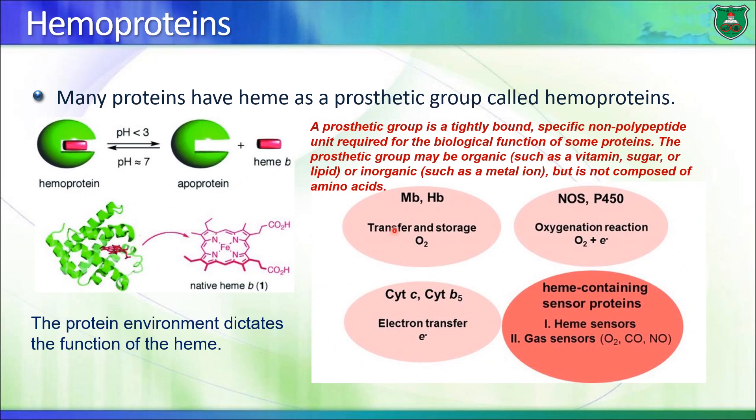Myoglobin and hemoglobin are holo proteins. A holo protein is a protein that has a non-protein group bound to it. If this non-protein group is removed, the protein is known as an apoprotein. An example includes lipoproteins — proteins associated with lipids that act as lipid carriers. If we remove the lipid part, the remaining proteins are known as apolipoproteins.